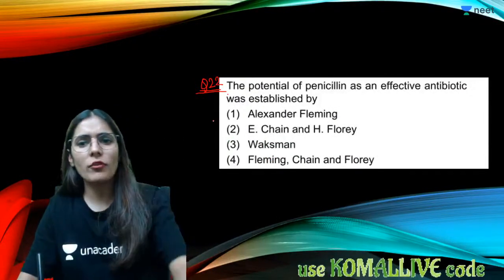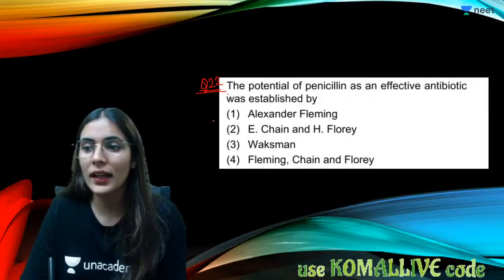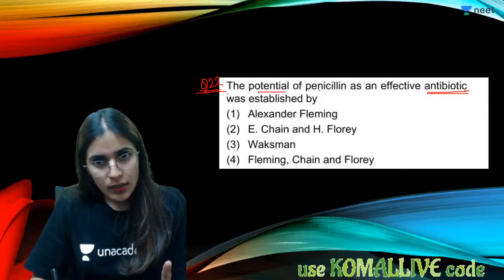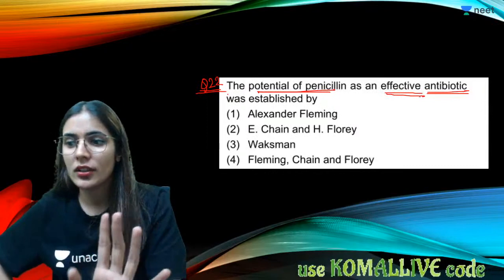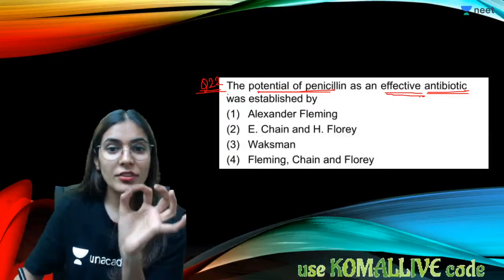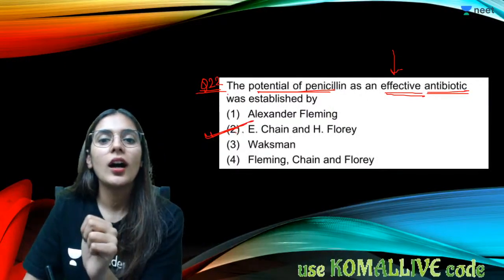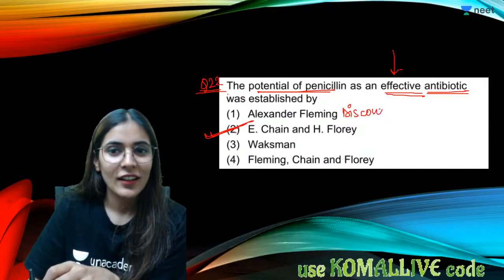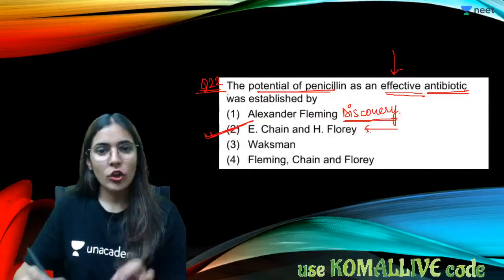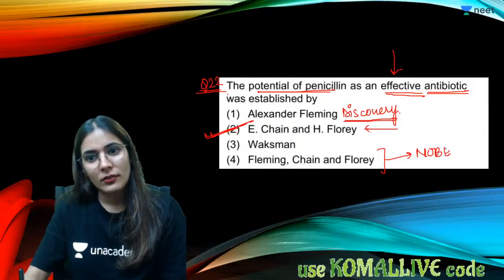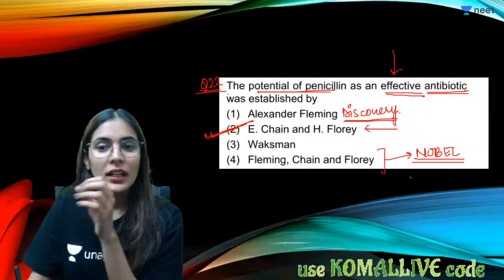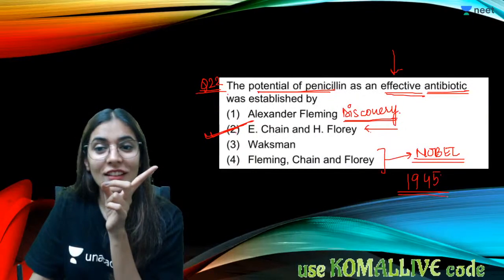Question twenty-two: the potential of penicillin as an effective antibiotic was established by Chain and Florey — not Fleming. Fleming discovered penicillin, but Chain and Florey converted it into a proper antibiotic. All three — Fleming, Chain, and Florey — received the Nobel Prize in 1945: Fleming for discovery, Chain and Florey for its development as an effective antibiotic.